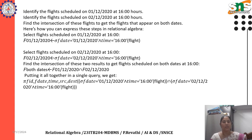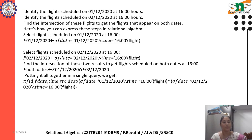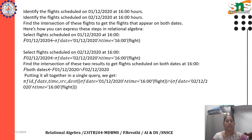Find the intersection of these two results to get flights scheduled on both dates at 16. F_both_dates := F_1-12-2020 ∩ F_2-12-2020. Putting it all together in a single query: pi FID, FDATE, time, source, destination ( selection FDATE = 1-12-2020 AND time = 16 of flight ) ∩ ( selection FDATE = 2-12-2020 AND time = 16 of flight ).